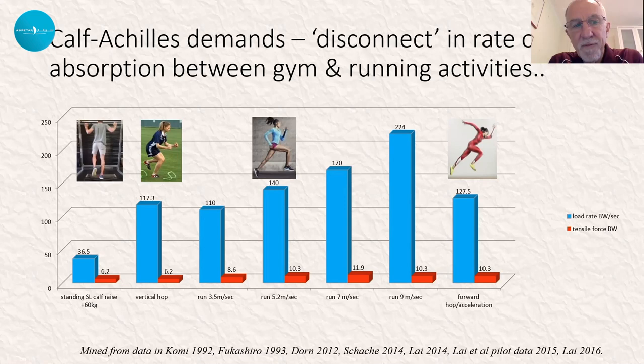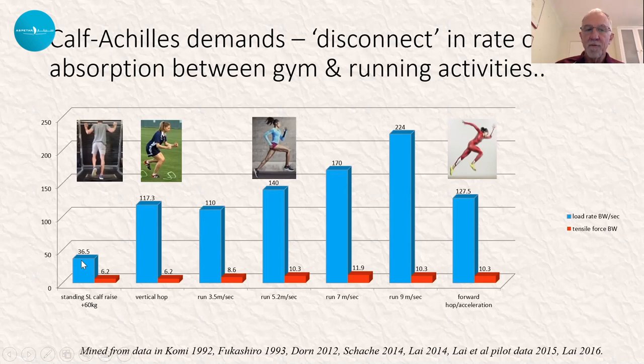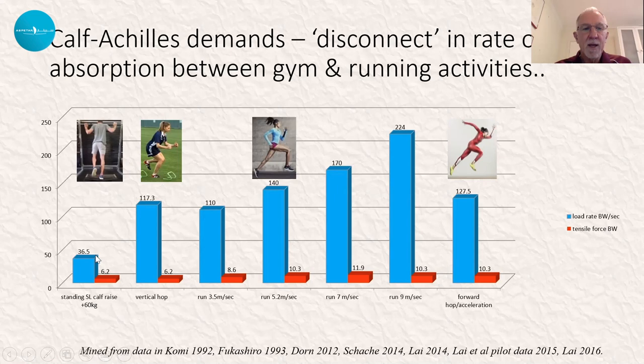The big feature to appreciate is that if we do a calf raise in a Smith machine with 60 kilograms — close to body weight — that's only about a third of the way towards meeting the rate of loading demands we're placing on the calf-Achilles complex in either very slow running or hopping. Our rehabilitation has got to consist of multiple increments, introducing plyometric pulsing and plyometric-type activities to take us all the way up to matching the demands of slow running and then ultimately fast running.